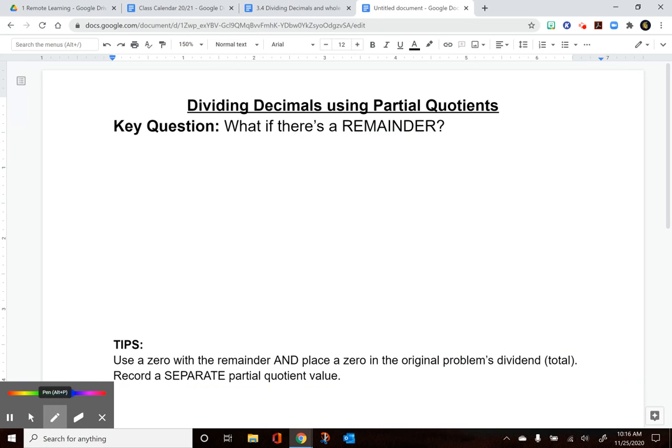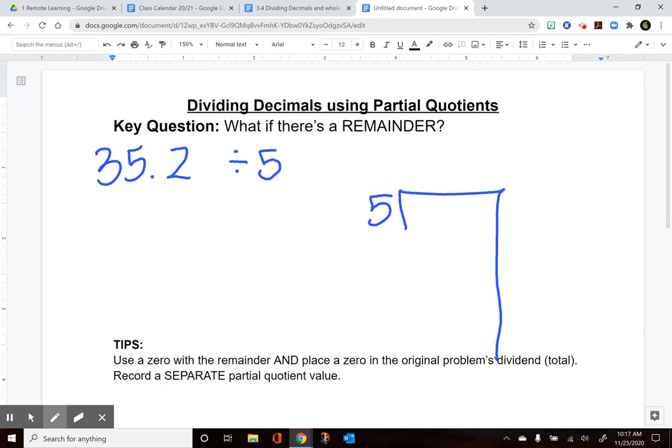The next problem starts with the total dividend 35.2. We're going to split that into bundles of fives again. Ignore the decimal as we're splitting—I'm really thinking about splitting up 352. Twenty groups of five always gives bundles of 100, so I'm going to start with a bundle of twenty.